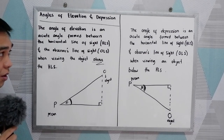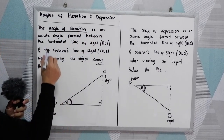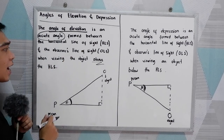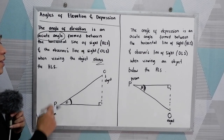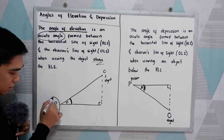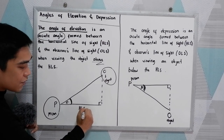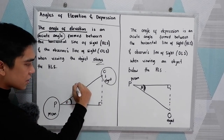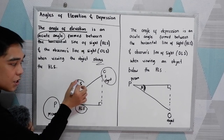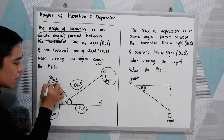To illustrate the angle of elevation and depression, let's have the definition. The angle of elevation is an acute angle formed between the horizontal line of sight and the observer's line of sight when viewing the object above the horizontal line of sight. In our illustration where P stands for the person and O is the object, the angle formed between the horizontal line of sight and the observer's line of sight is our angle of elevation.